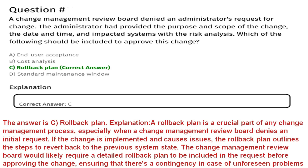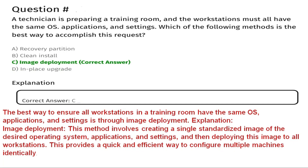A rollback plan is a crucial part of any change management process, especially when a change management review board denies an initial request. If the change is implemented and causes issues, the rollback plan outlines the steps to revert back to the previous system state. The review board would require a detailed rollback plan to ensure there is a contingency in case of unforeseen problems. That's why the correct answer is C, rollback plan.